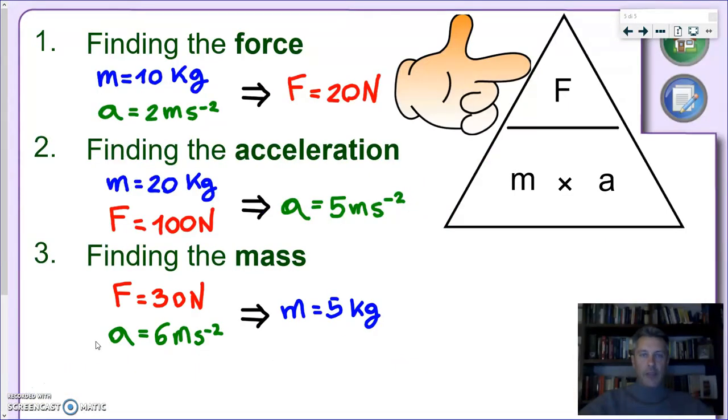Of course, if I give you the mass of an object and the acceleration, you want to find what is the resultant force, the total force acting on this object. But in other cases, we might want to find the mass of the object or the acceleration. And this is a typical case where we can use the magic triangle, as you can see here. Force on the top, mass acceleration on the bottom.